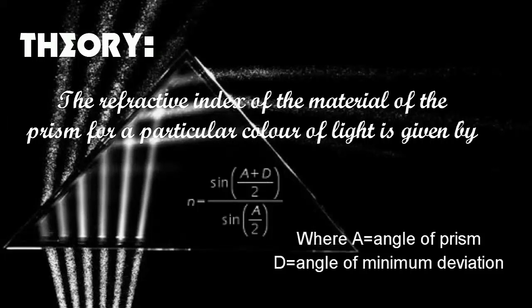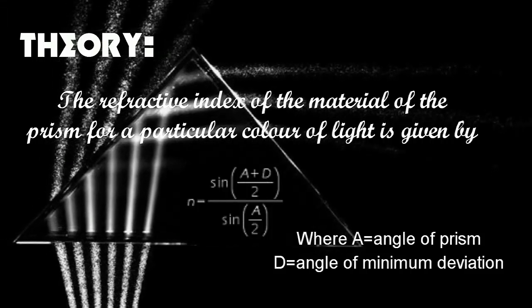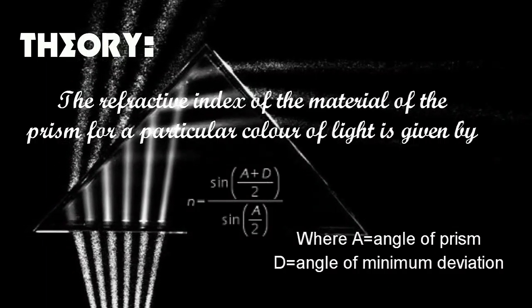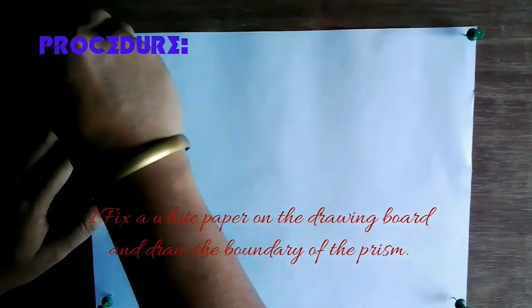n equals sine of A plus D over 2, divided by sine of A over 2, where A is the angle of the prism and D is the angle of minimum deviation.